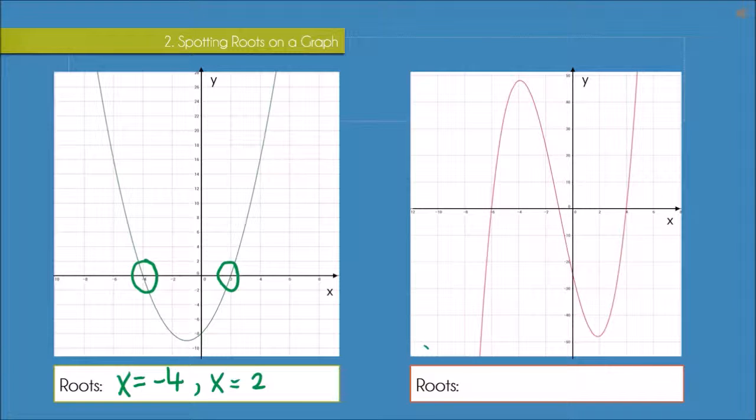So moving on to the cubic function we have on the right, hopefully you can see that there are three places where the graph crosses the x axis, which means we have three different roots. Another word we can use for different is distinct, so we can say that this cubic function has three distinct real roots.